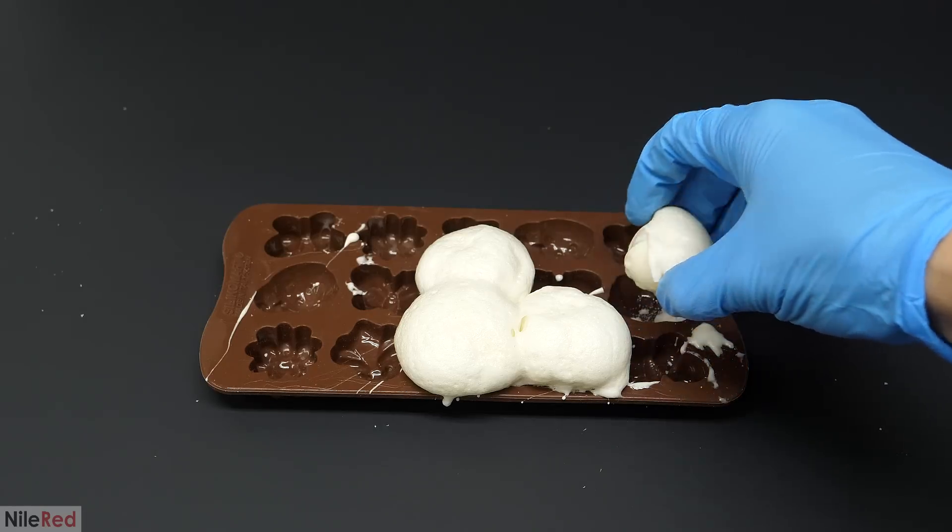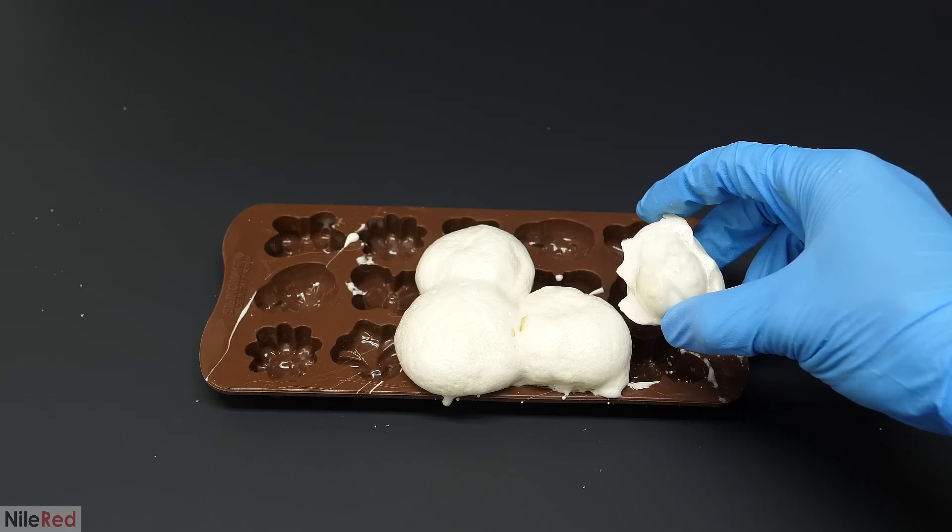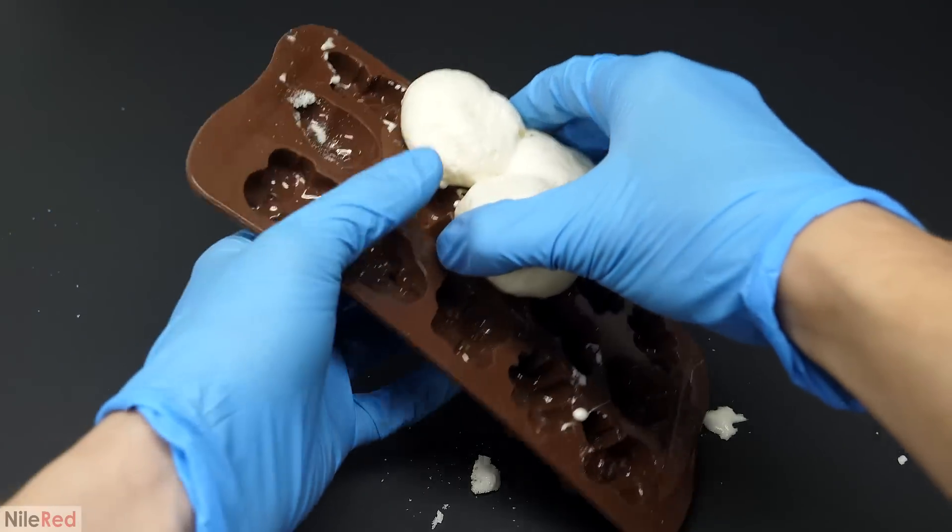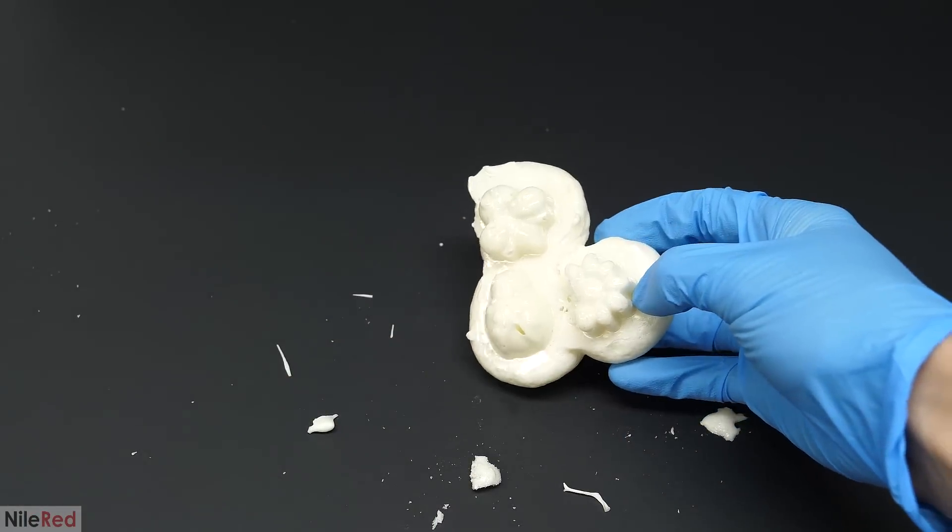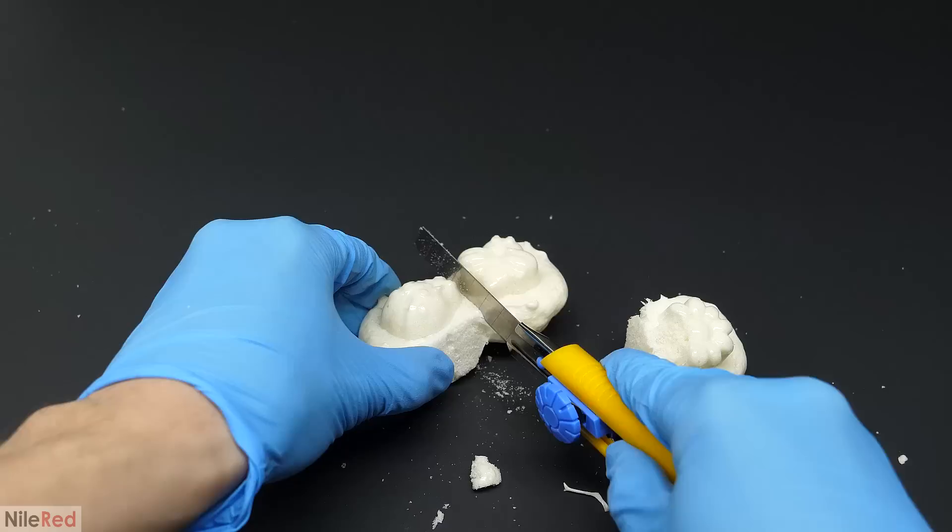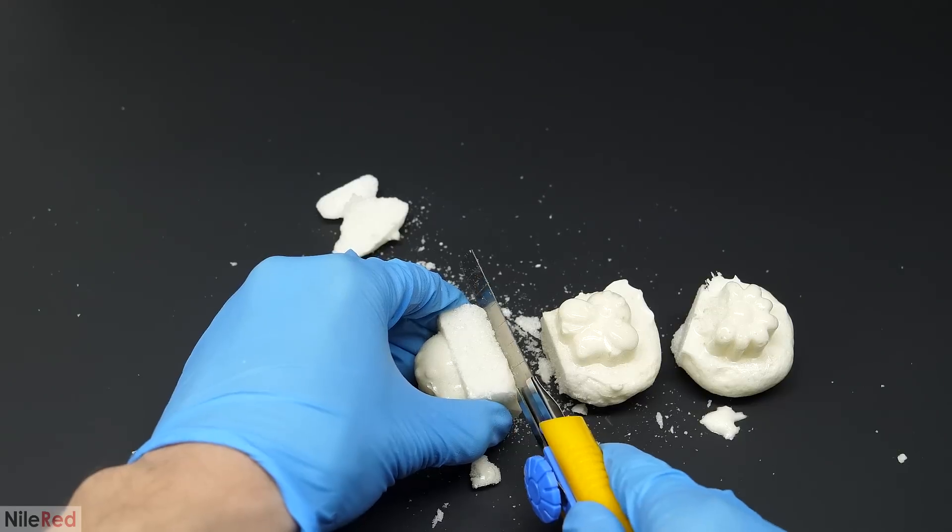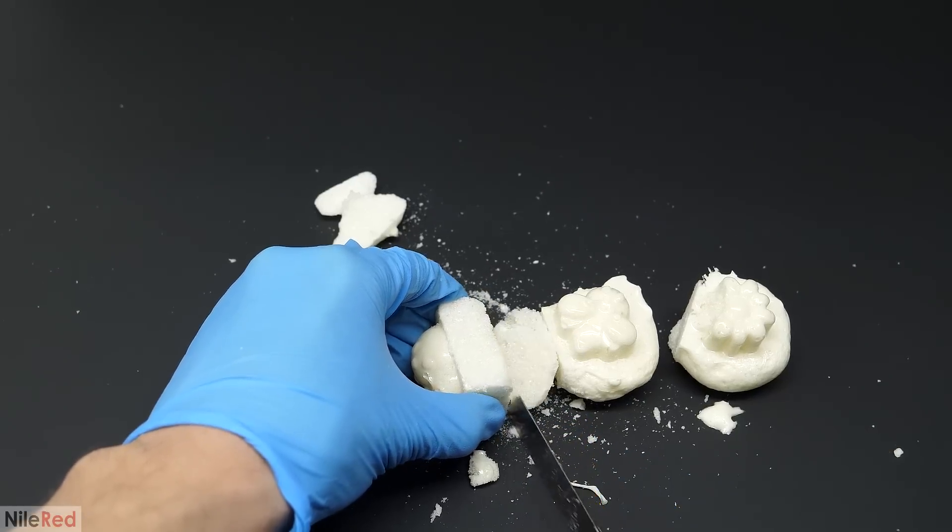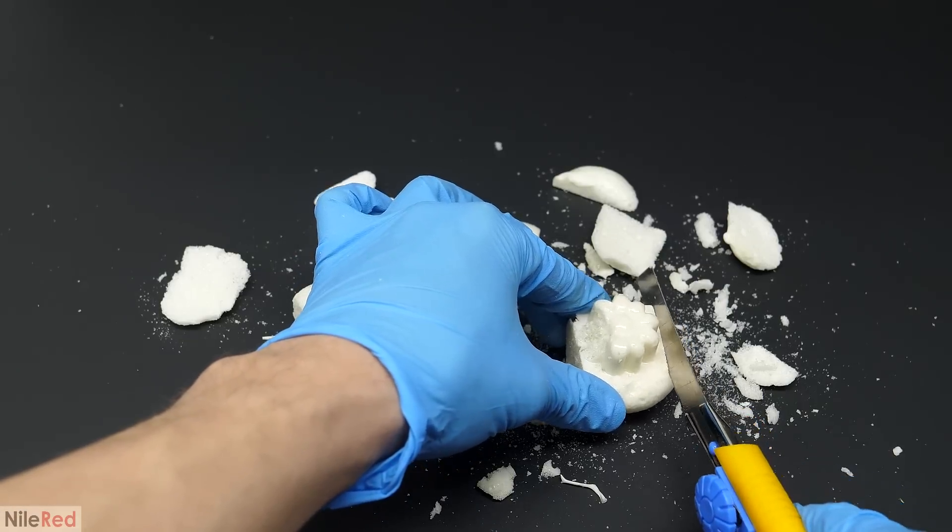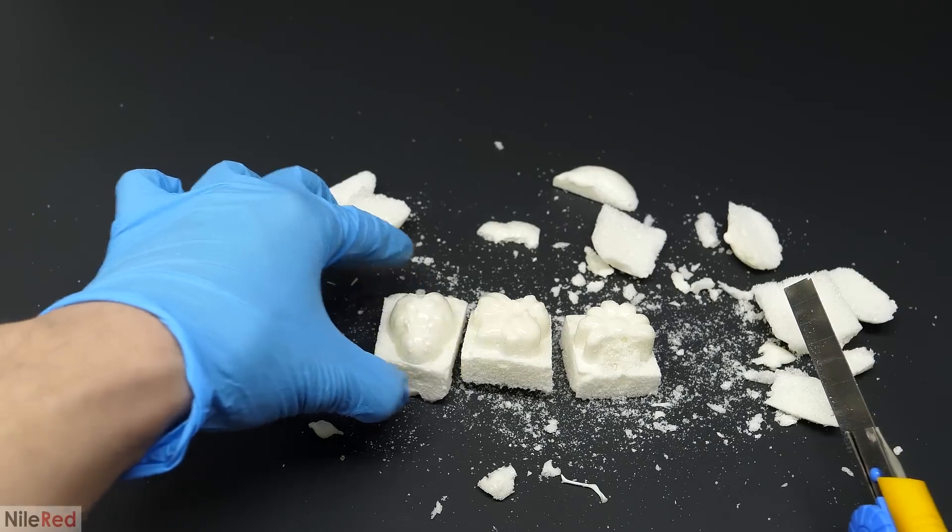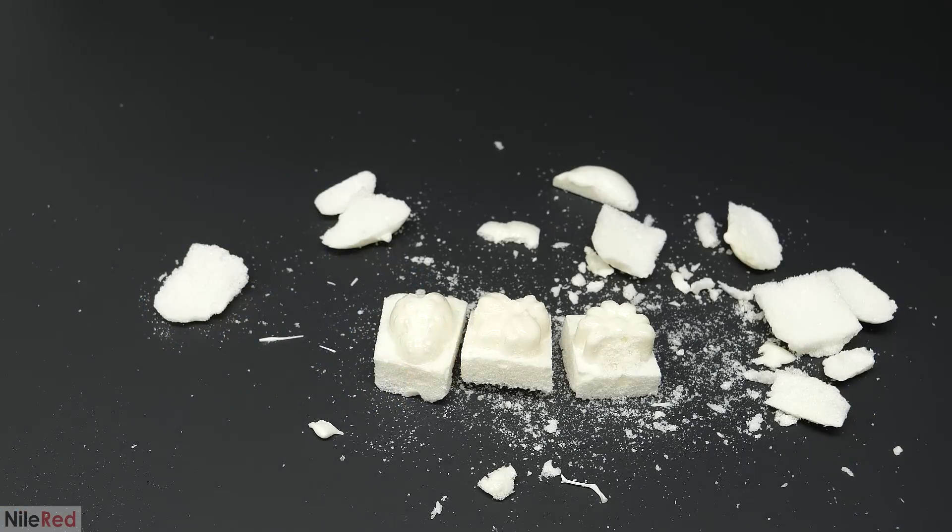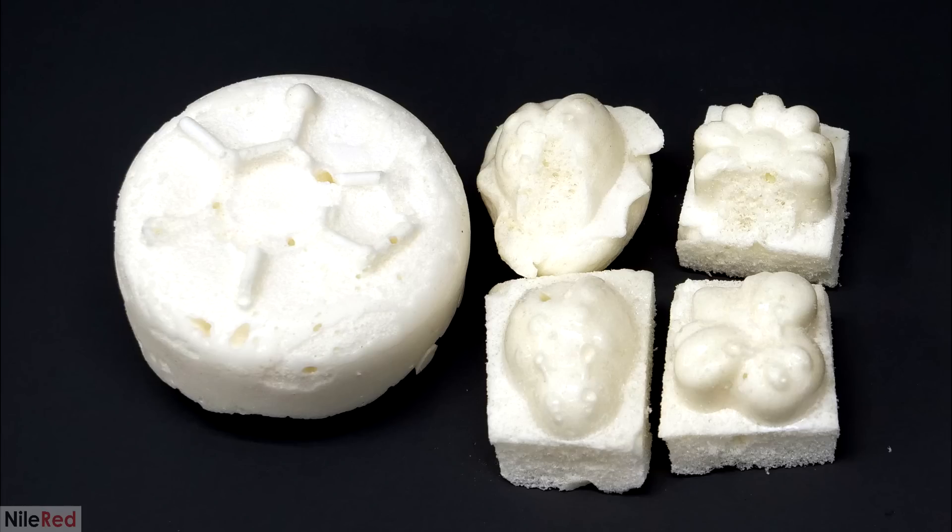I then moved on to demolding the other pieces. The first one didn't have much to work with but the other three had a lot of excess foam so I was able to shape them using a razor blade. In the end this was the final result and I was pretty happy with how it all turned out.